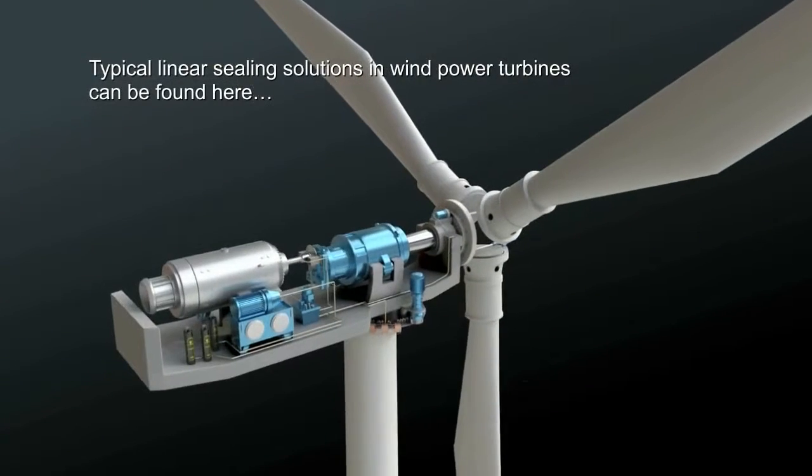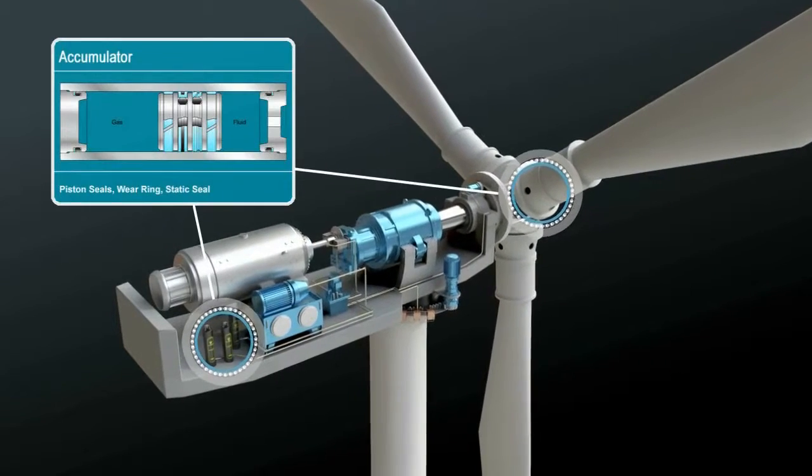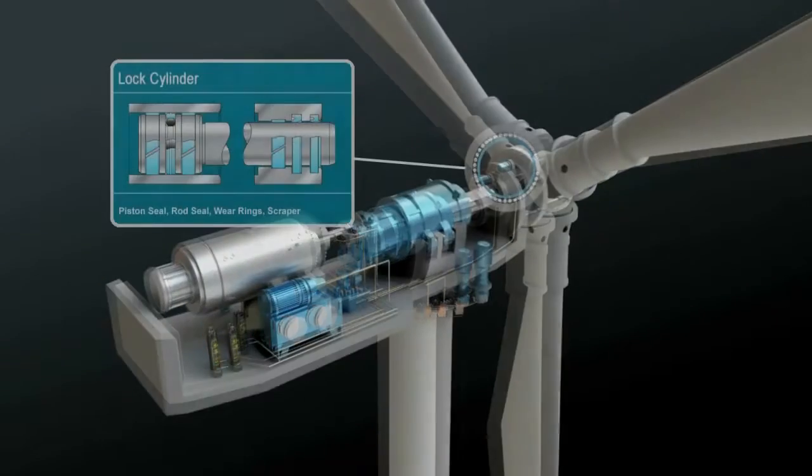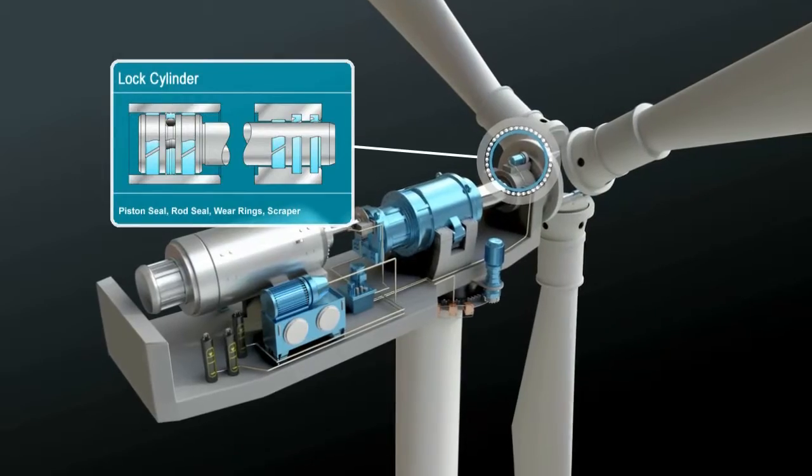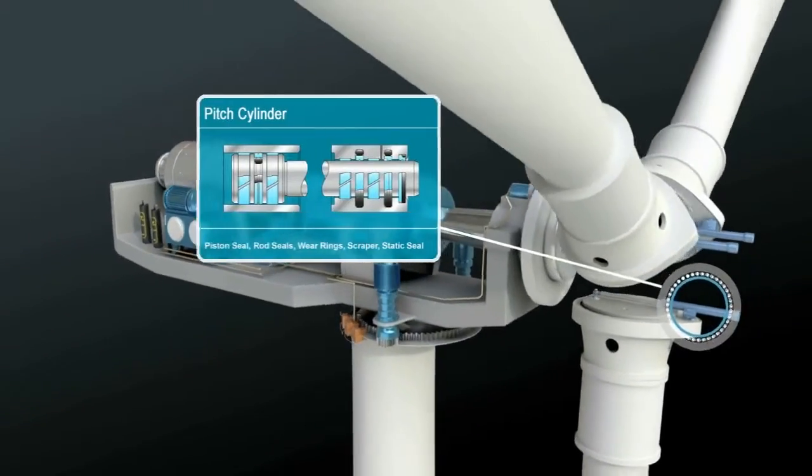Typical solutions for wind power include the turbine's main brake, its accumulator, lock cylinder, yaw brake, and pitch cylinder.